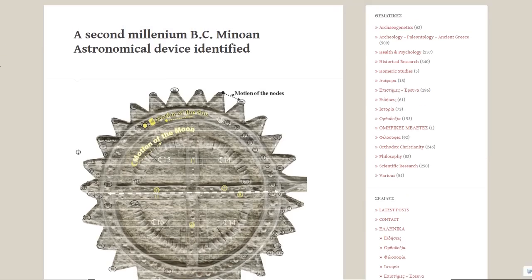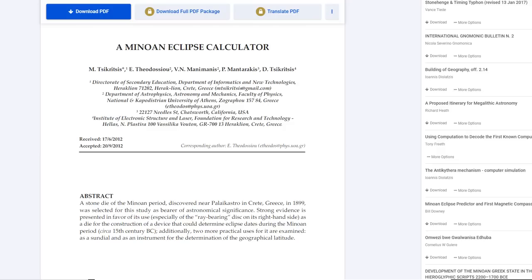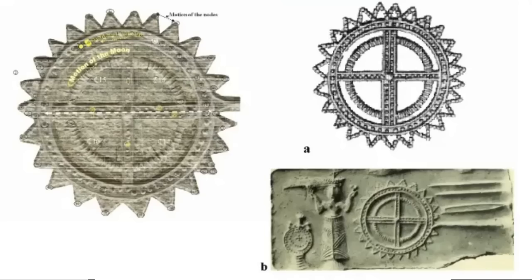We're talking about a second millennium BC Minoan astronomical device: the Minoan Eclipse Calculator. According to the researchers, the Minoan object found in 1898 in the Palakastro of Crete predates the mechanism of Antikythera by 1400 years. It's the first analog computer known in history, and it's a portable one.